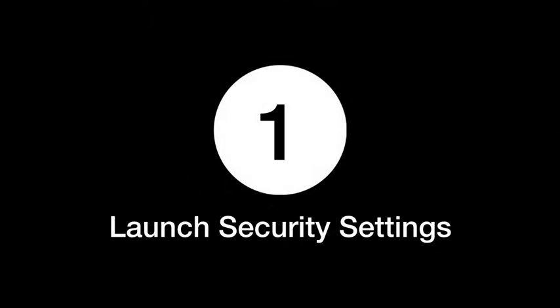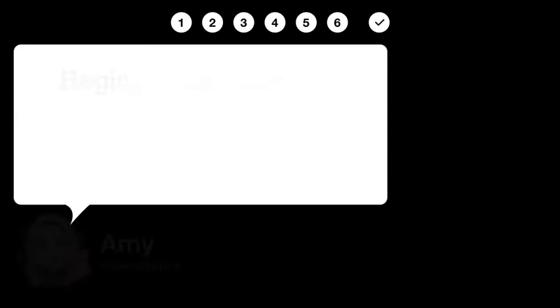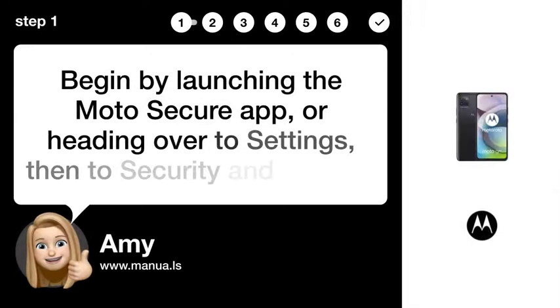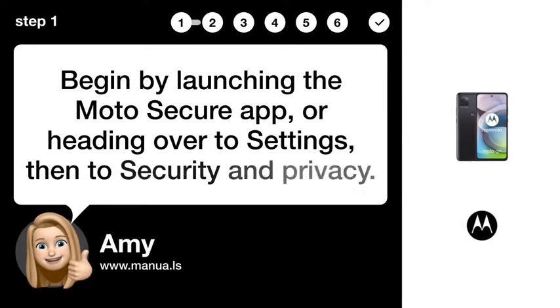Step 1: Launch Security Settings. Begin by launching the Moto Secure app, or heading over to Settings, then to Security and Privacy.